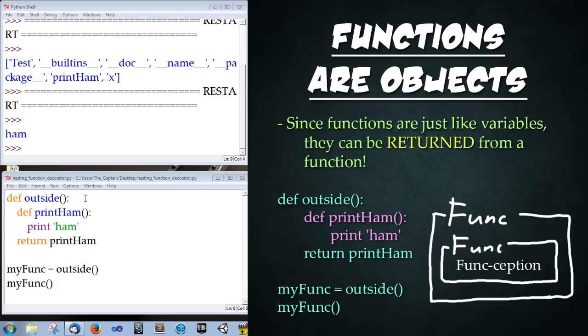So what magic just happened? So temporarily ignore this definition of outside. What are we doing within it? Well here we're actually defining a function called print ham and it's creating an object within the function and then we're returning that object. So why bother with this? Why not just create the function outside?